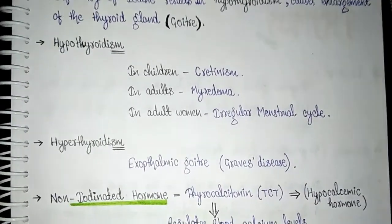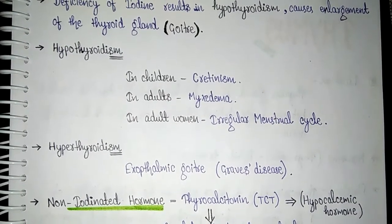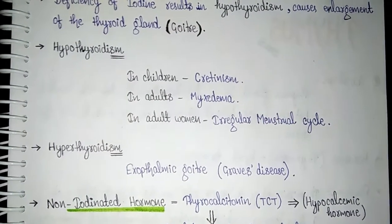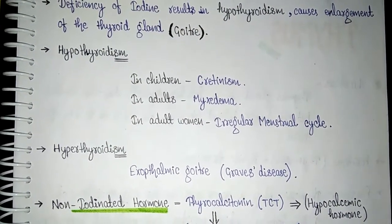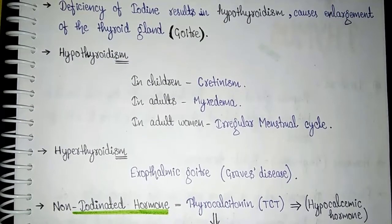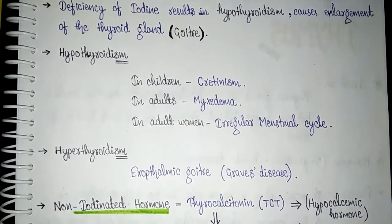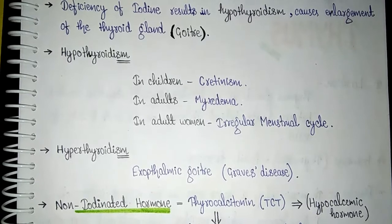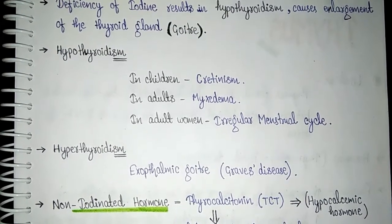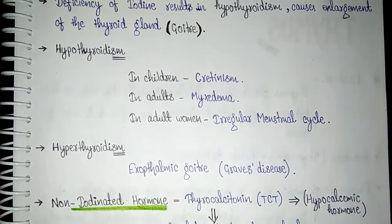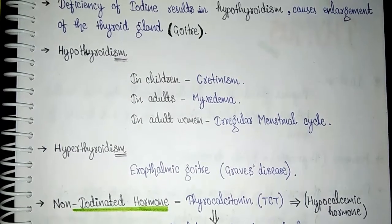Now let's discuss over-secretion and under-secretion of thyroxine. If there is a deficiency of thyroxine in the body, the condition is called hypothyroidism. If thyroxine is being secreted in a very large amount, that condition is called hyperthyroidism.